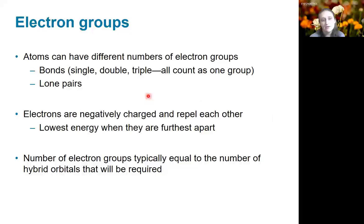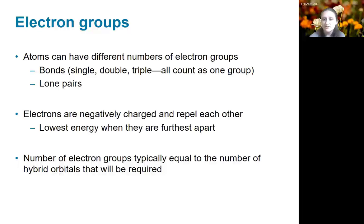Any bond — whether that's a single bond, a double bond, or a triple bond — will count as a single electron group. Since electrons are negatively charged, they repel each other and will achieve the lowest possible energy when they're furthest apart. The reason that the electron groups are critical for determining hybridization is that the number of electron groups is typically equal to the number of hybrid orbitals that will be formed.